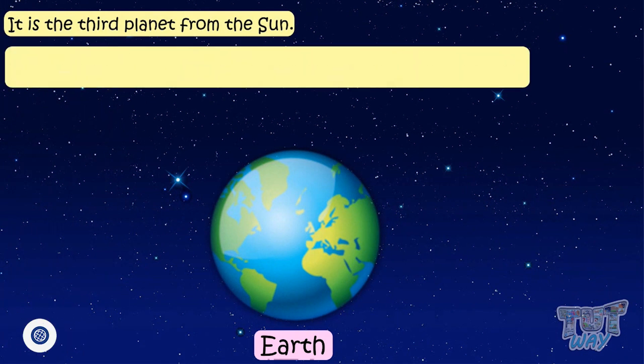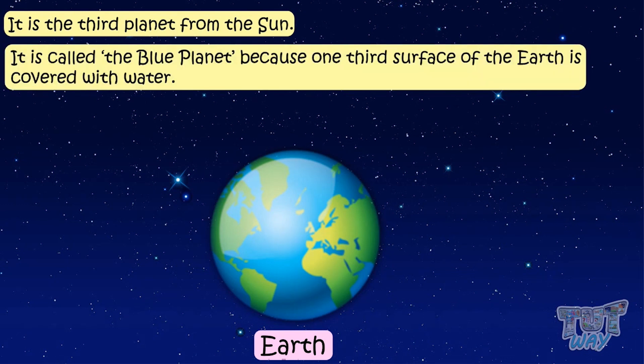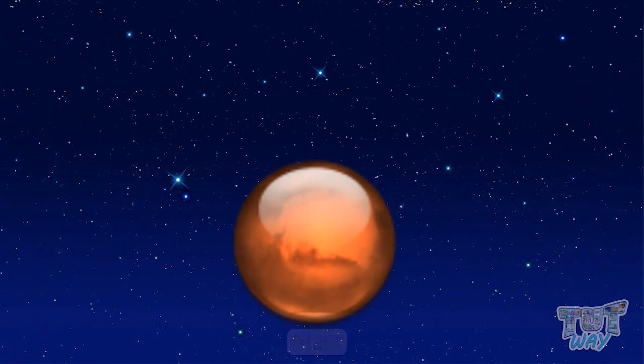Earth is the third planet from the sun. It is the planet we live on, and it's a unique planet as it's the only planet with life on it. It is called the blue planet because one-third of the surface of Earth is covered with water.